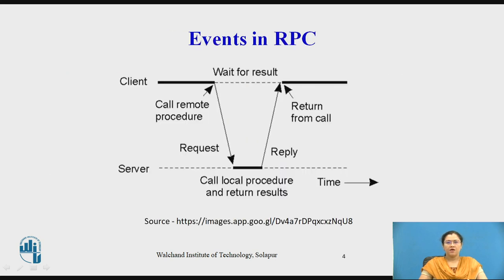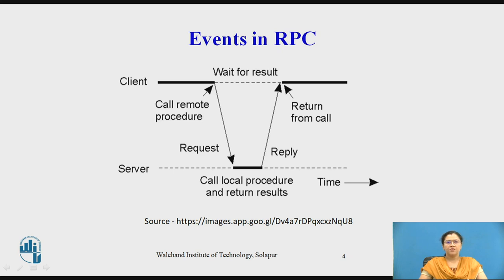Now we will see the different events and how they occur in RPC. This diagram shows us how a client call has been made and how the server has given the reply. The client calls the client stub — the call is a local procedure call with parameters pushed onto the stack in the normal way. Then the client stub packs the parameters into a message and makes a system call to send that message. The client's local operating system sends the message from the client machine to the server machine. The local operating system on the server machine passes the incoming packets to the server stub. The server stub unpacks the parameters from the message. Finally, the server stub calls the server procedure. The reply traces the same steps in the reverse direction and the appropriate result is sent back to the client.